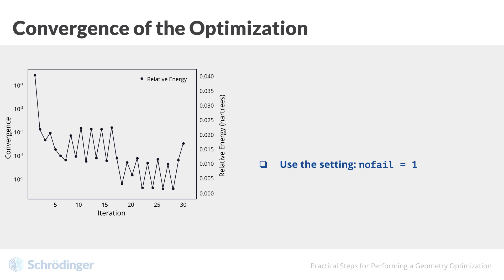The setting nofail equals 1, which helped with the solution of the DFT equations, can also help with the geometry optimization process as well. This setting can help select the next geometry more judiciously. In general, we recommend using nofail equals 1 in all geometry optimizations, and many workflows that involve a Jaguar geometry optimization include this setting by default.